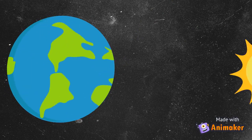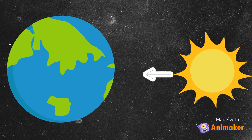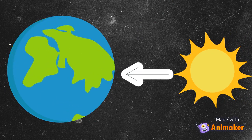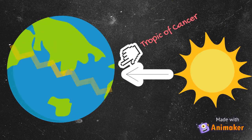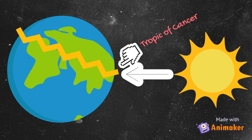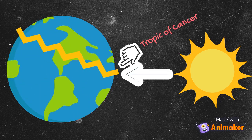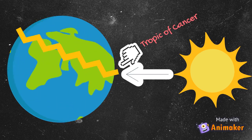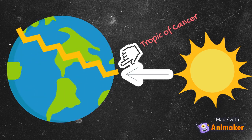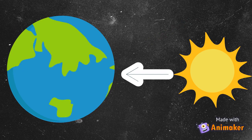During summer, the sun overheads at the Tropic of Cancer. The wind belts shift northwards, so the ITCZ also shifts to the north, and this causes the rainy season.